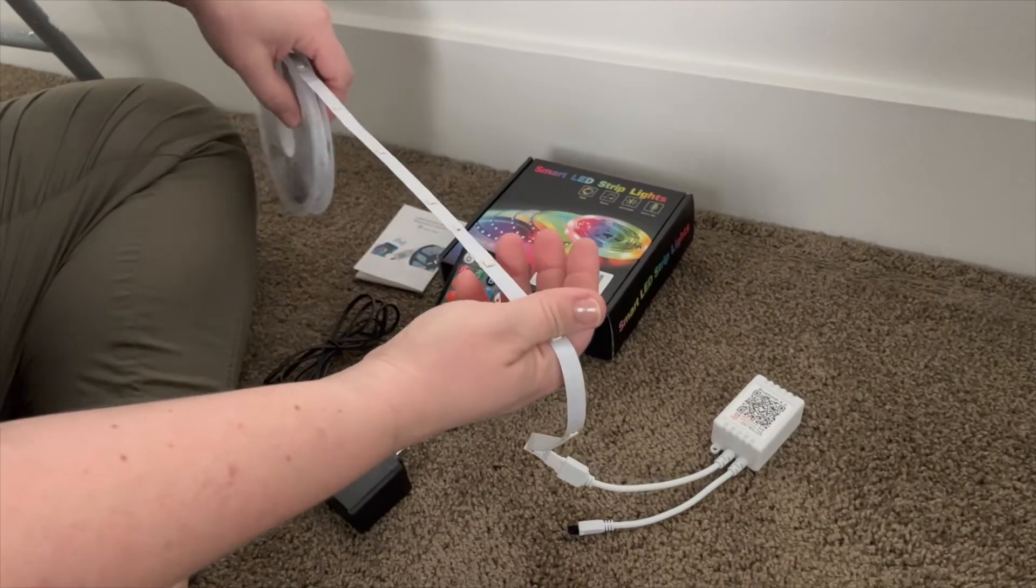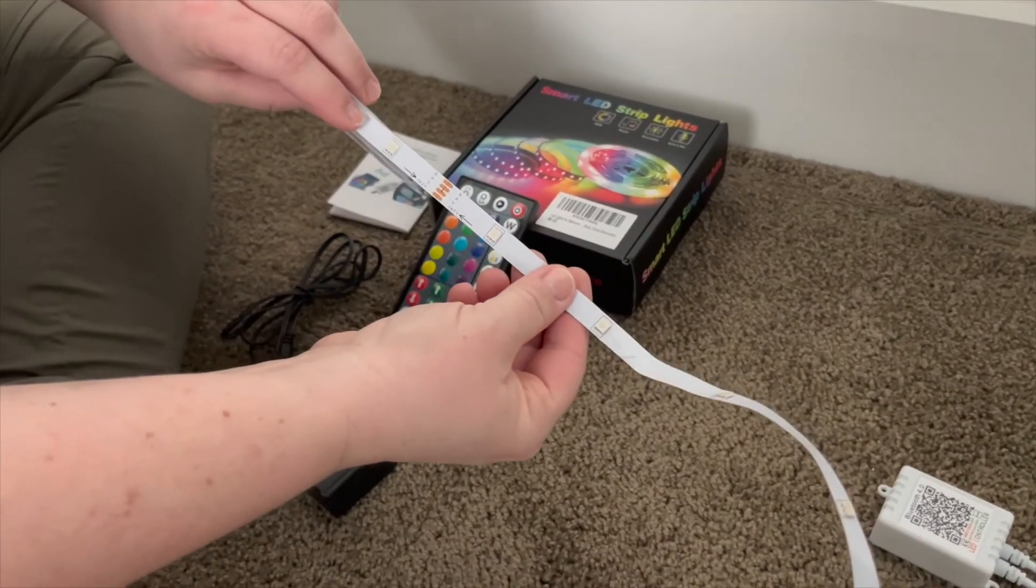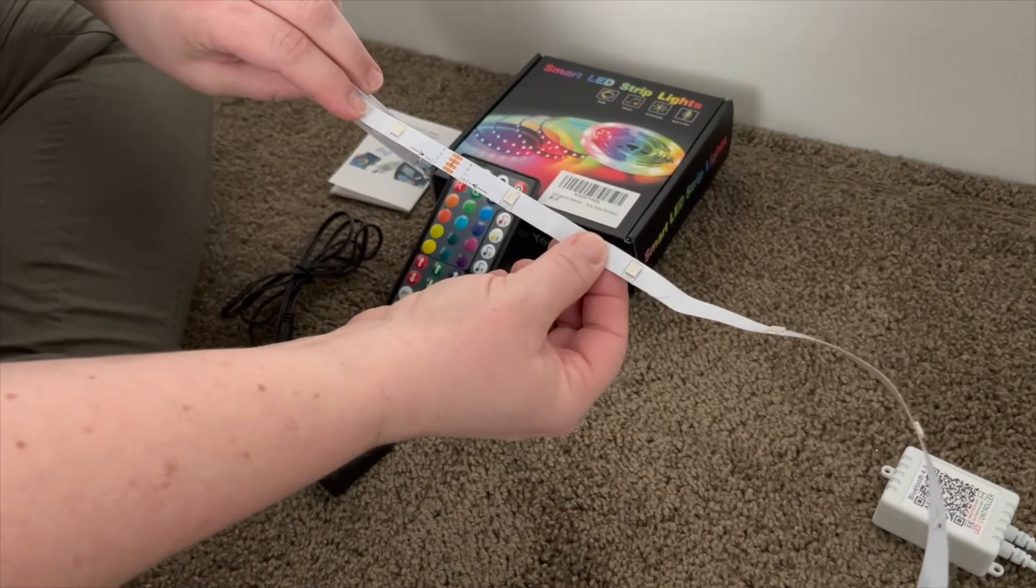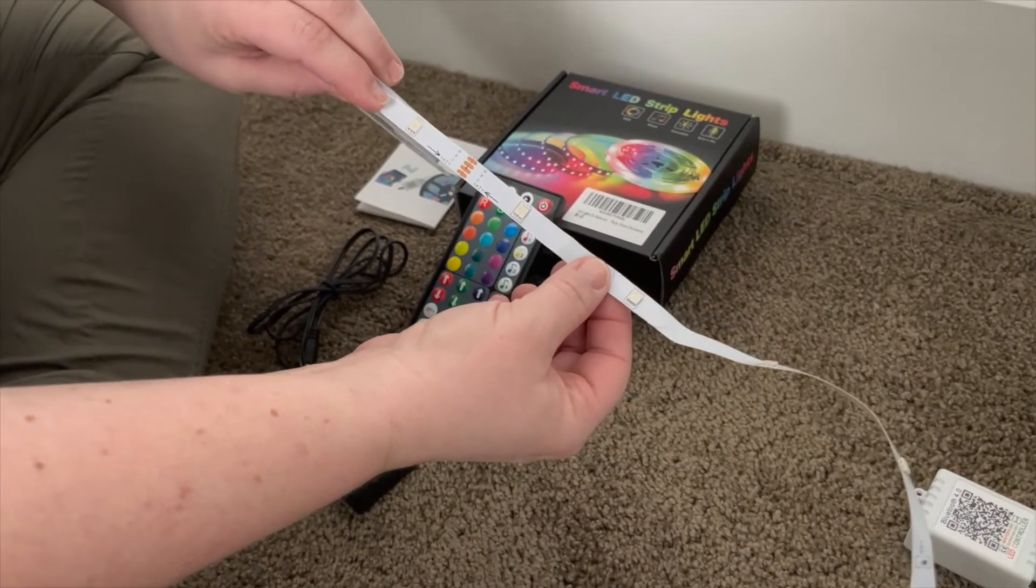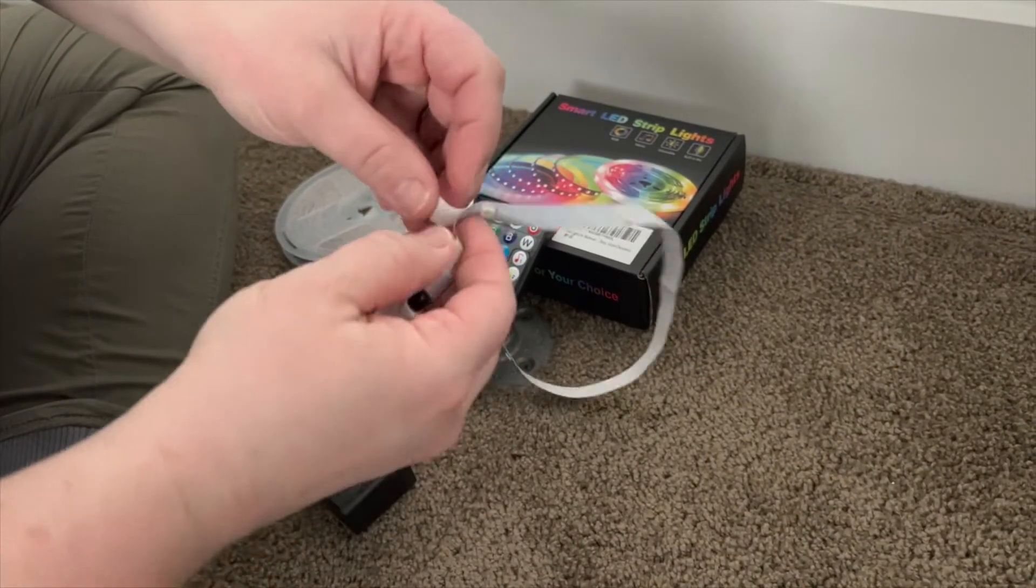And then once you get installing your lights, if you need to trim it, just make sure to trim them with scissors in between this area. And they're easily installed just with this 3M tape.